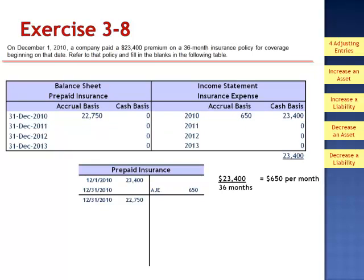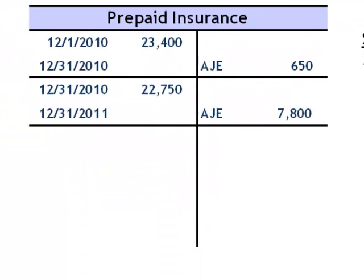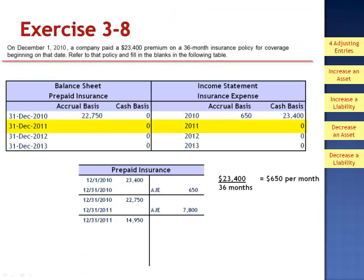In the next year, we have 12 months' worth of coverage. So the adjusting entry on December 31st, 2011 would be 12 months at $650 per month, $7,800, dropping the balance in prepaid insurance to $14,950. The 2011 financial statements would report $14,950 on the balance sheet in prepaid insurance and $7,800 on the income statement in insurance expense.